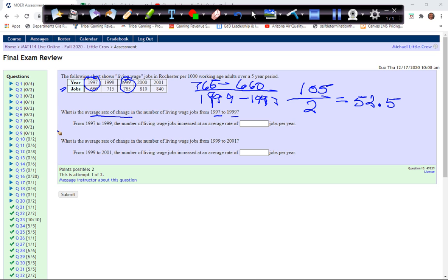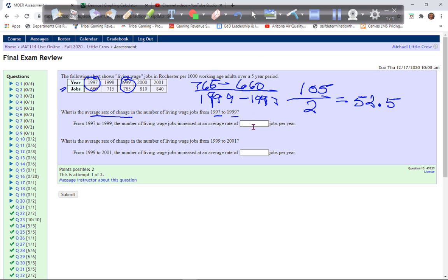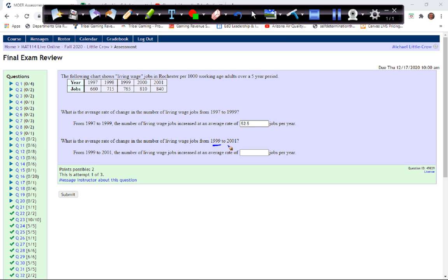So this is going to be 52.5 and it doesn't say anything about rounding, so we'll just put that in as 52.5. What is the average rate of change in number of living wage jobs from 99 to 2001? And again, this is the same thing, only we'll do it for two different points. We'll use this as the first point and that is the second point. So again, we use our slope formula, take the y2 minus y1 and the x2 minus x1.